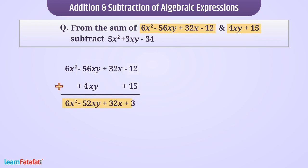From this sum, we have to subtract this expression. We will follow the same method. First, we will write the expression from which the other expression is to be subtracted. Then we will write the other expression below it such that the like terms will be exactly below the like terms.